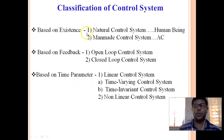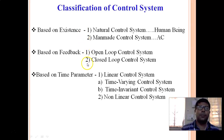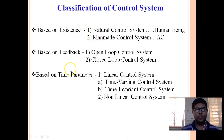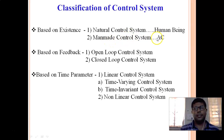Next, we see the classification of control systems. There are many classifications — depending on the type of input, nature, existence, feedback, time parameter, and analysis. In the syllabus, only three types are included. The first classification is based on existence: natural control systems (e.g., the human body) and man-made control systems (e.g., AC, vehicles, hand dryers).